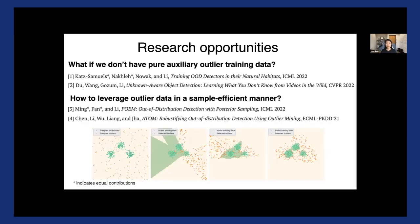And another related research question is how do we leverage this outlier data in some sample efficient manner? This is particularly useful when we're dealing with a very large sample space of outlier data. And so we put forward this notion of outlier mining, which aims to identify those most informative outlier training data points that's sufficiently close to the decision boundary between ID versus OOD, as you see in this figure down below.